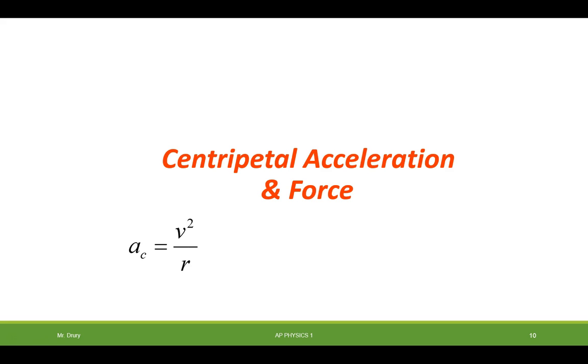In the last video we talked about the derivation of centripetal acceleration and how this acceleration is acting towards the center of the circle. And it's due to a velocity of the object that wants to fly off on a tangent.